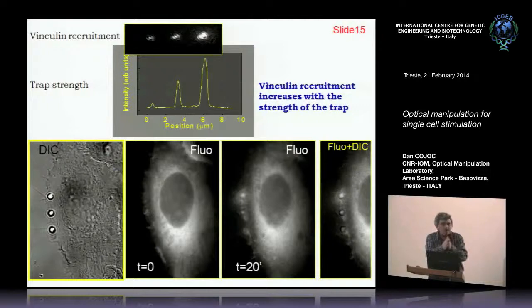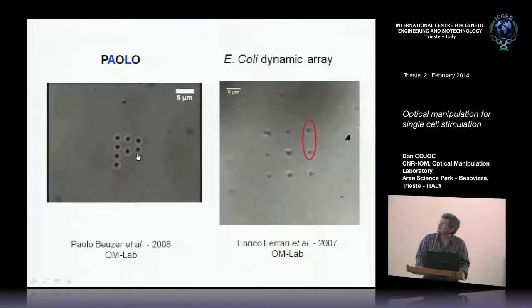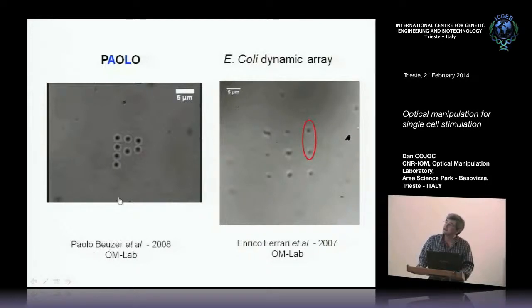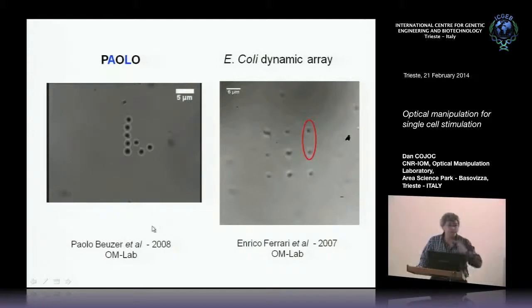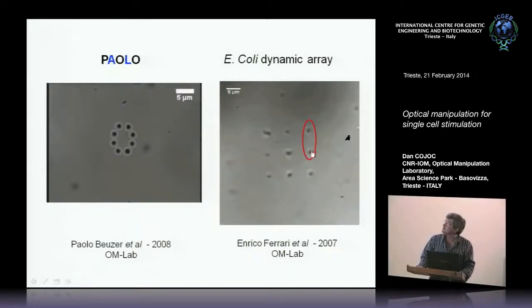This means vinculin accumulated more there — the cell answered at that specific focal adhesion point by accumulating more actin, increasing rigidity, because vinculin binds actin. More actin moves to that focal adhesion point in response to higher force. We can also demonstrate the dynamicity: a student who did his master with us played with beads to write his name 'Paolo', and the same approach can be implemented with cells — for example building a 3×3 array of E. coli and rearranging their positions.